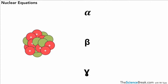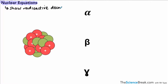Today we're going to take a look at nuclear equations and what they mean. Nuclear equations show radioactive decay — how radioactive decay happens. We've looked at radioactive decay in the previous video; you might want to watch that one again if you're not sure.